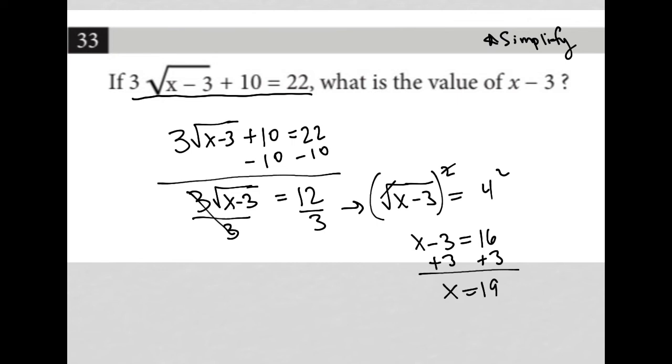Now, don't make the mistake of thinking that the answer is 19 because remember, we never actually finish reading the question. So the rest of this question says, what is the value of x minus 3? Well, now that we know x is 19, I'm just going to say 19 minus 3, which is 16. And therefore, the correct answer here is 16.